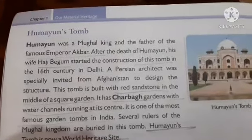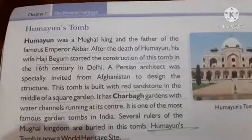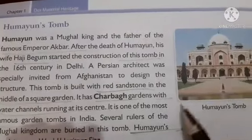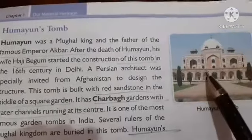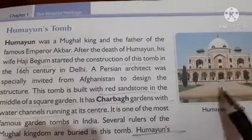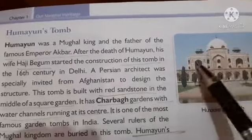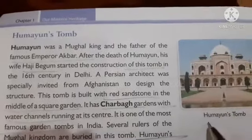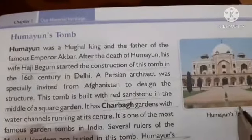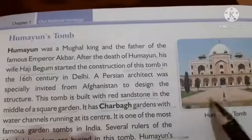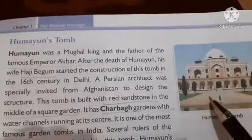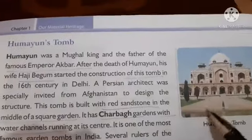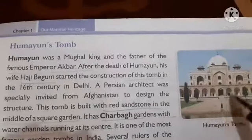Humayun's Tomb is in Delhi. A tomb is a place where the body of a special person is buried. Humayun was a Mughal king and was very famous. His wife built this tomb in his memory, and the body of Humayun was buried here.